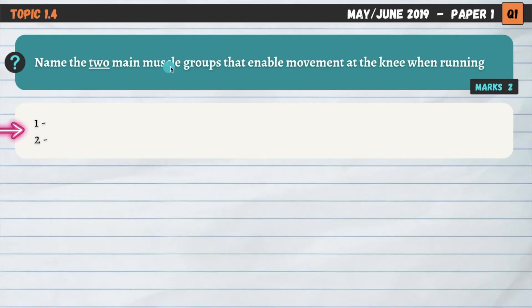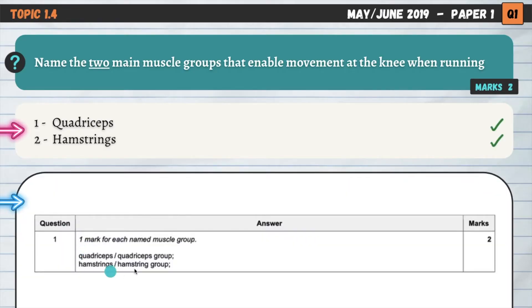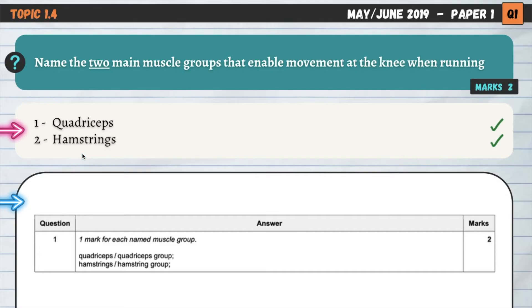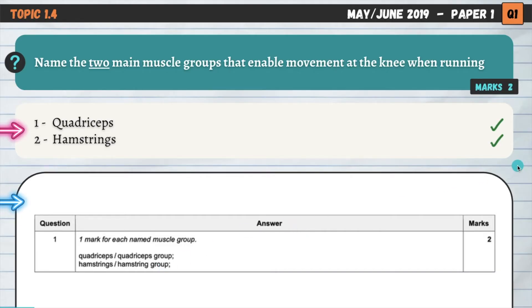Name the two main muscle groups that enable movement at the knee when running. The command word is name, which means nothing is needed beyond simply stating the two main muscle groups. Those two muscle groups are the quadriceps and hamstrings groups, as verified by the mark scheme. You'll get one mark for each named muscle group.